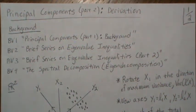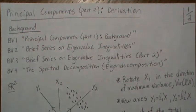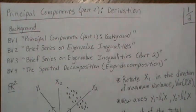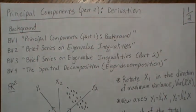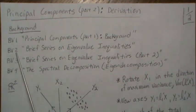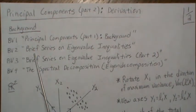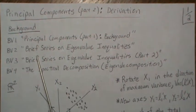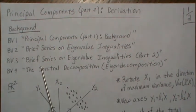Hello, this is part two of the principal components mini-series that I'm doing. I'm going to call this video 'Derivation,' where we derive how to calculate the principal components. I'll also give a basic intuition of what we're trying to do here. I have some background videos that we're going to quote — BV2 and BV3 in the proofs, which deal with eigenvalue inequalities.